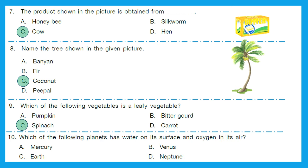Question 10: Which of the following planets has water on its surface and oxygen in its air? It sounds familiar, right? It's our own Earth. Option C — Earth is the right answer.